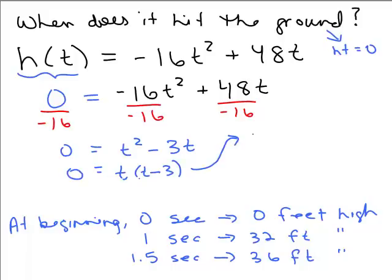So, we get t = 0 or t = 3 which makes sense because we know at t = 0, it was 0 feet high and a second ago we found out that at t = 3 it was also at 0 feet high. So, that's when it hits the ground again.